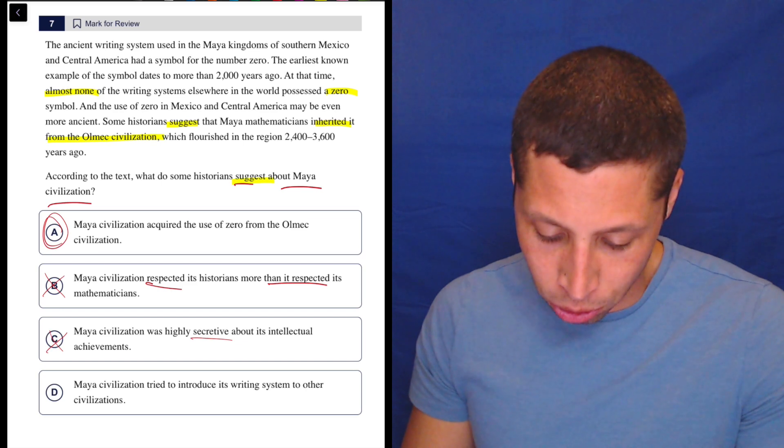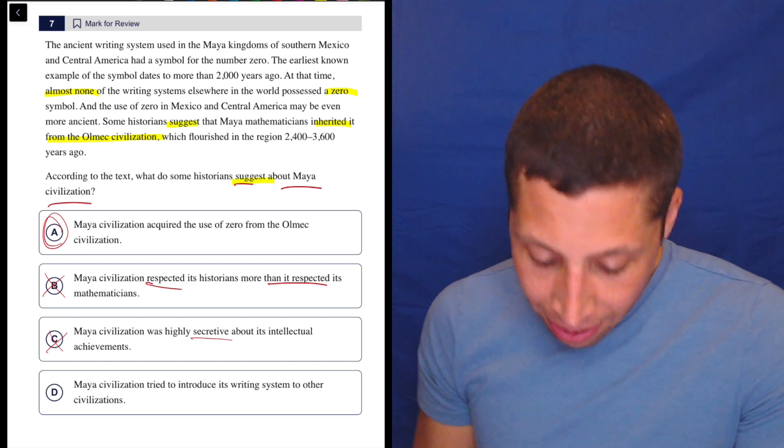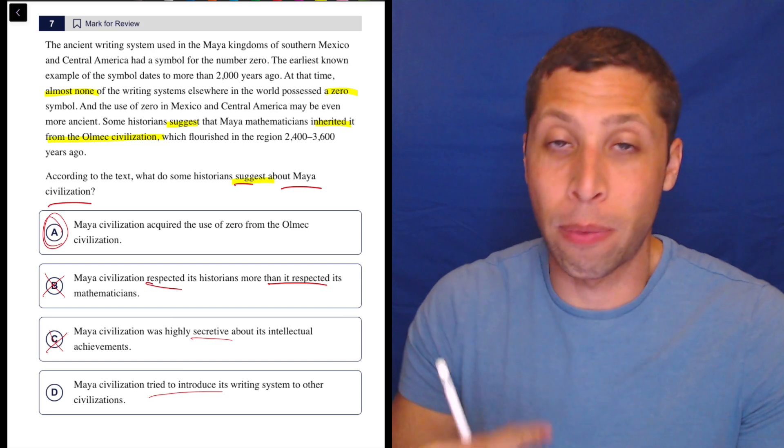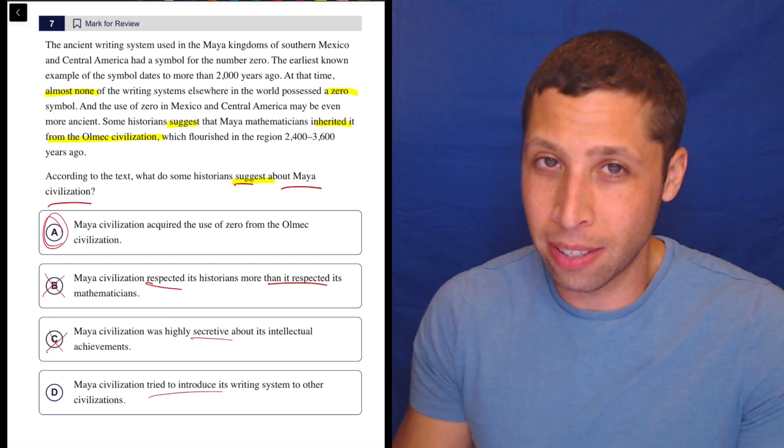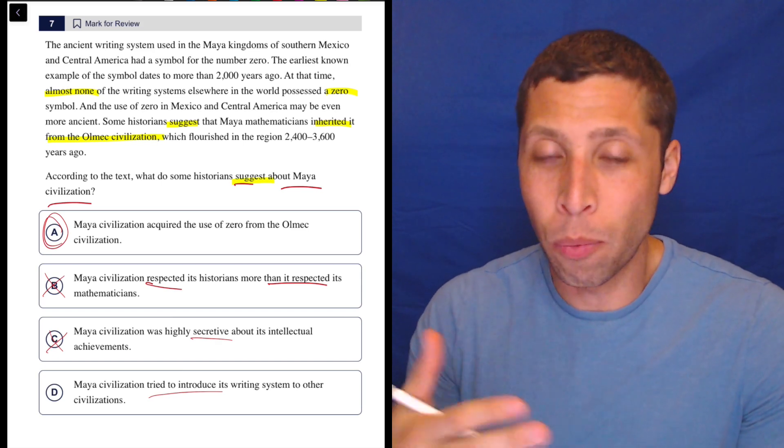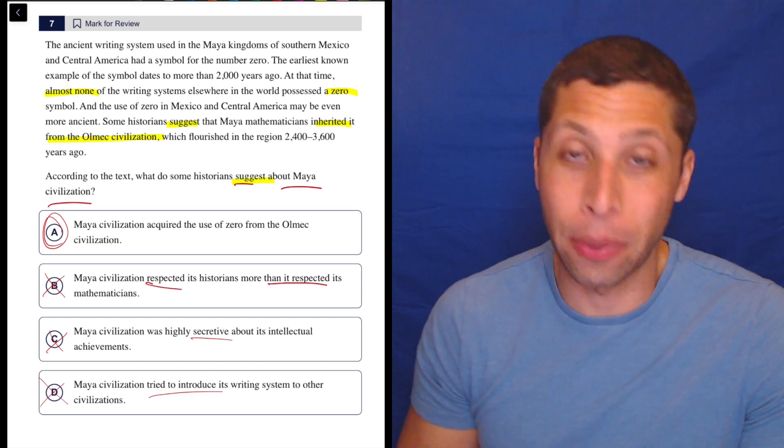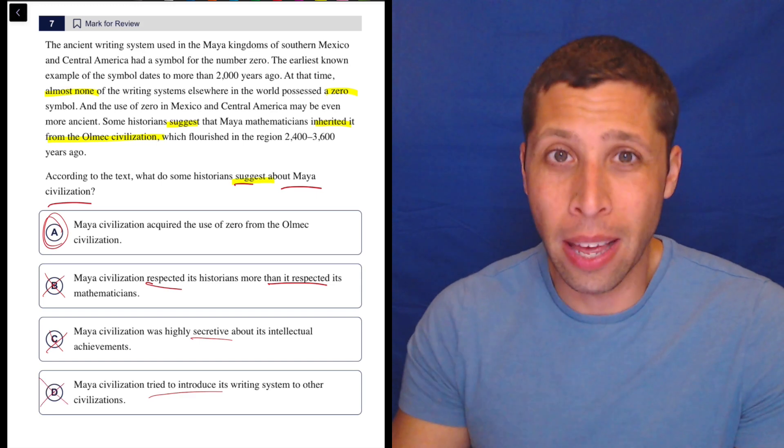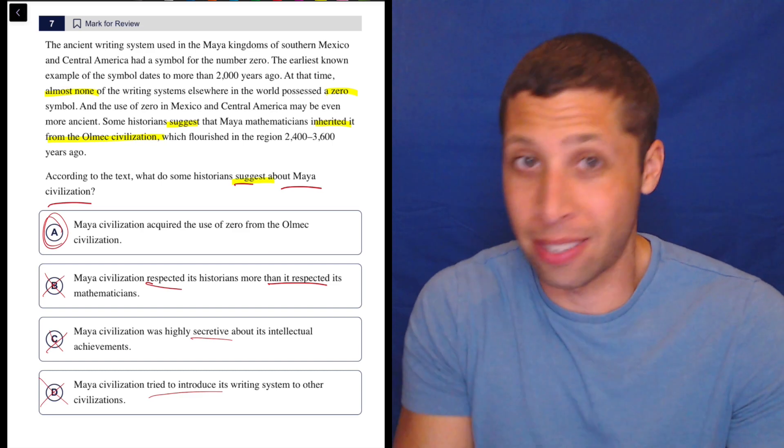D says Maya civilization tried to introduce its writing system to other civilizations. Well, it never says that. It says they got it from someone else, and it says that other places didn't have zero, but we don't know what the Maya did with that. So this is a good example of something that's just a leap that may be true, but it's not in the passage.